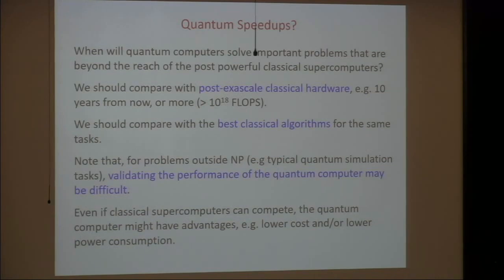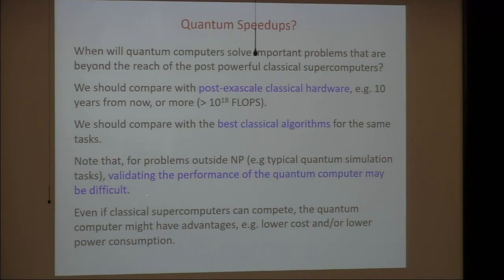So what do we want? We want quantum speedups — ideally solving some interesting problem with a quantum computer that surpasses what we can do with the best classical devices. To make a fair comparison, we should consider a classical computer running the best algorithm on the best hardware for solving the same problem, and look out a few years at what classical hardware might achieve when quantum computing starts to become competitive. We should also have in mind that it might not be easy to validate whether the quantum computer is really getting the right answer for problems beyond NP.